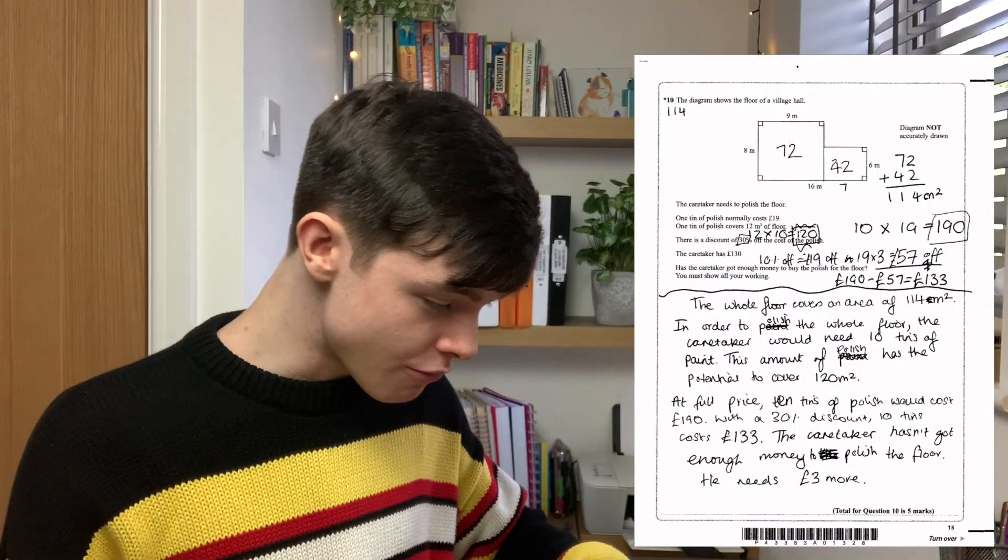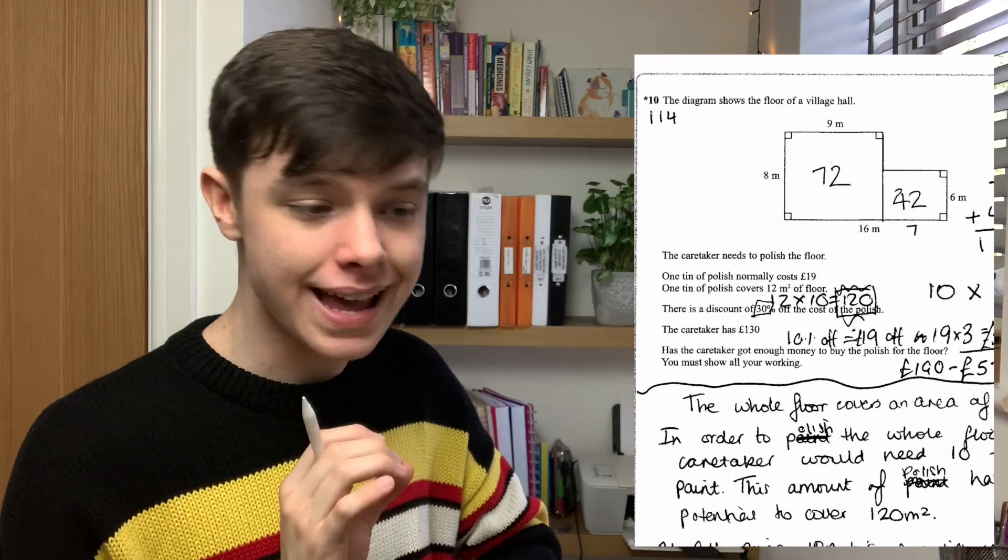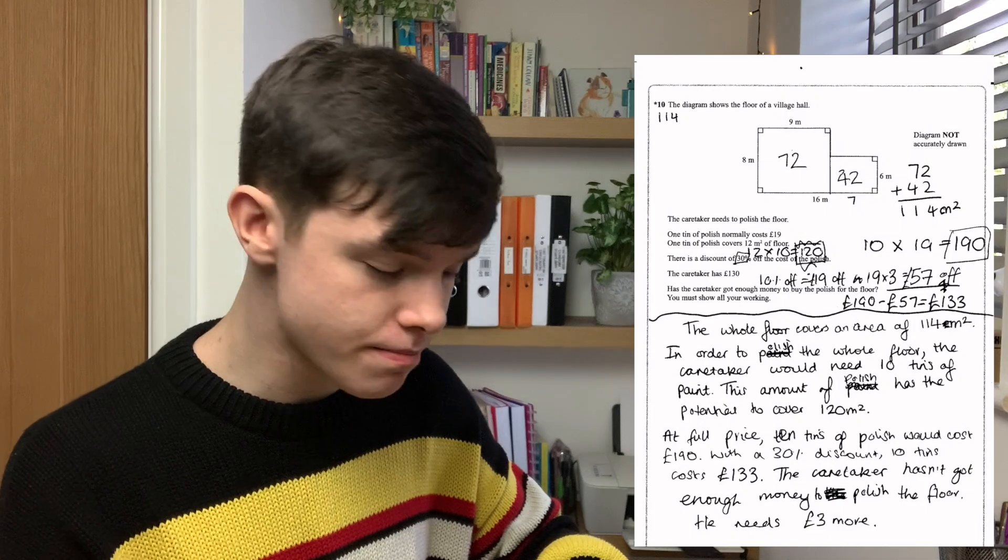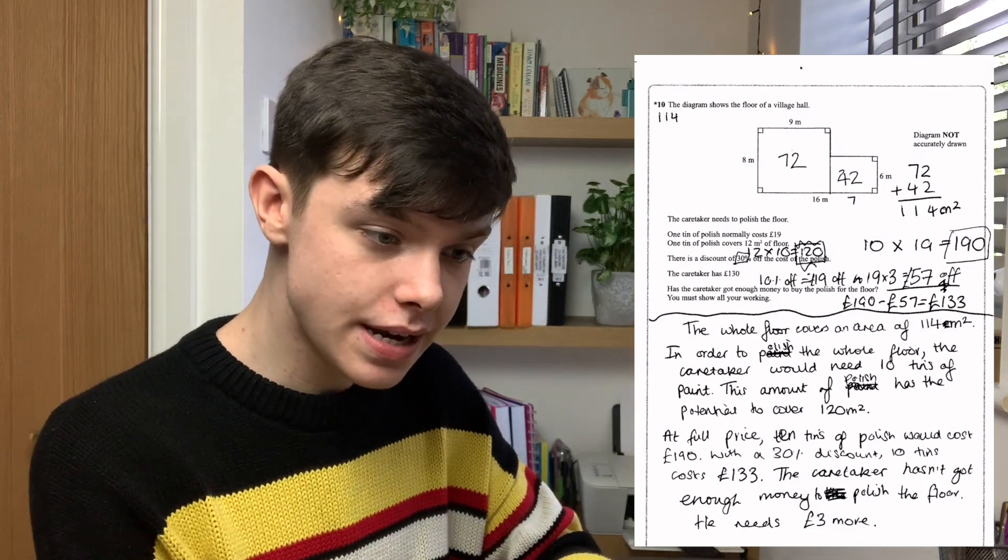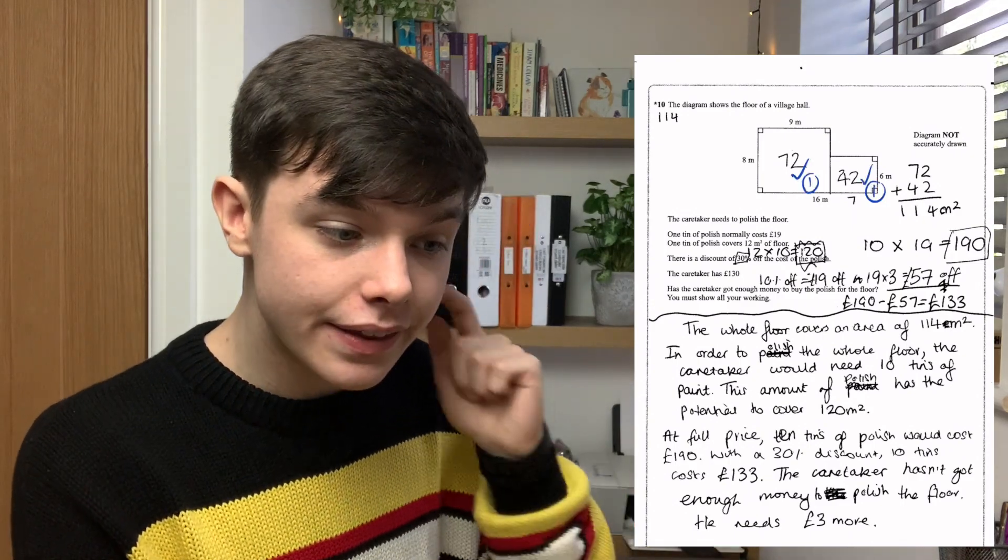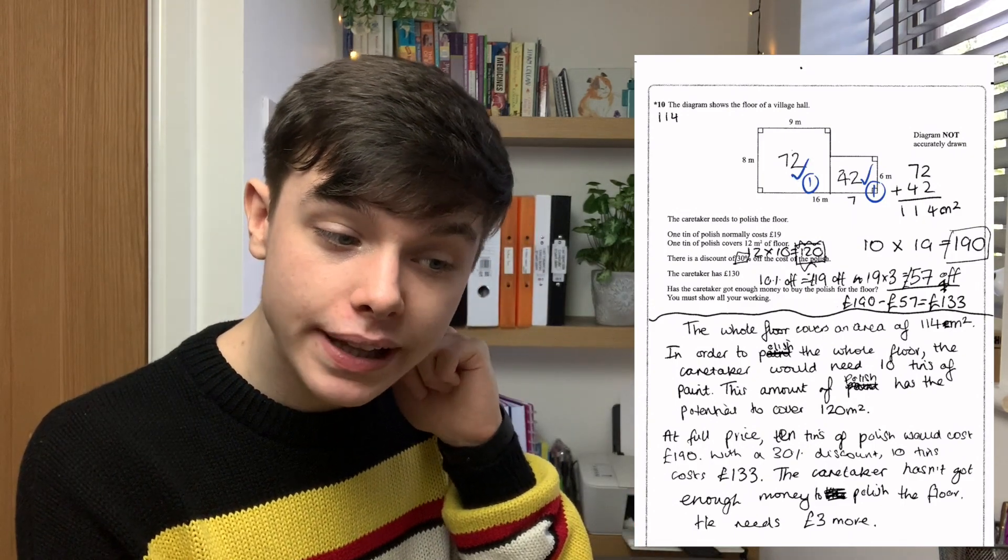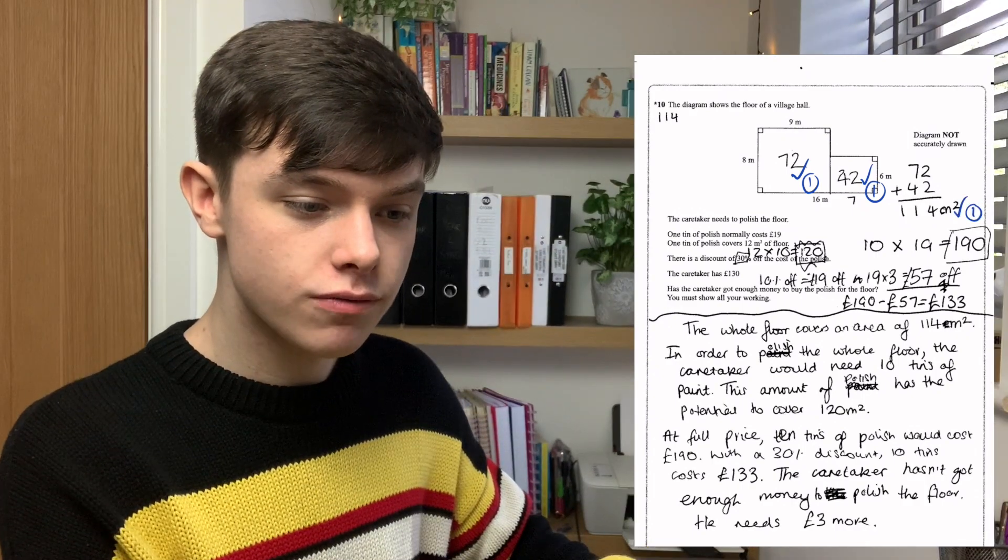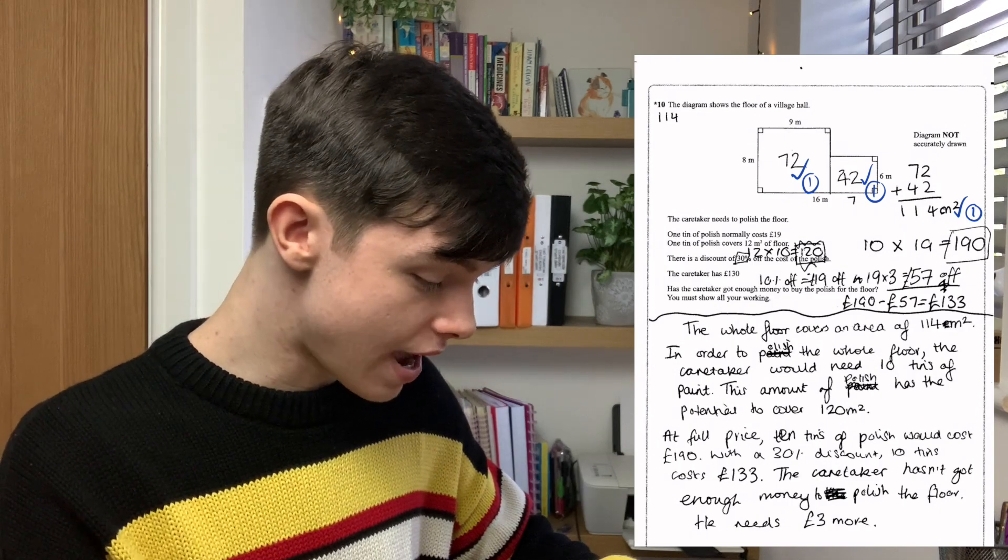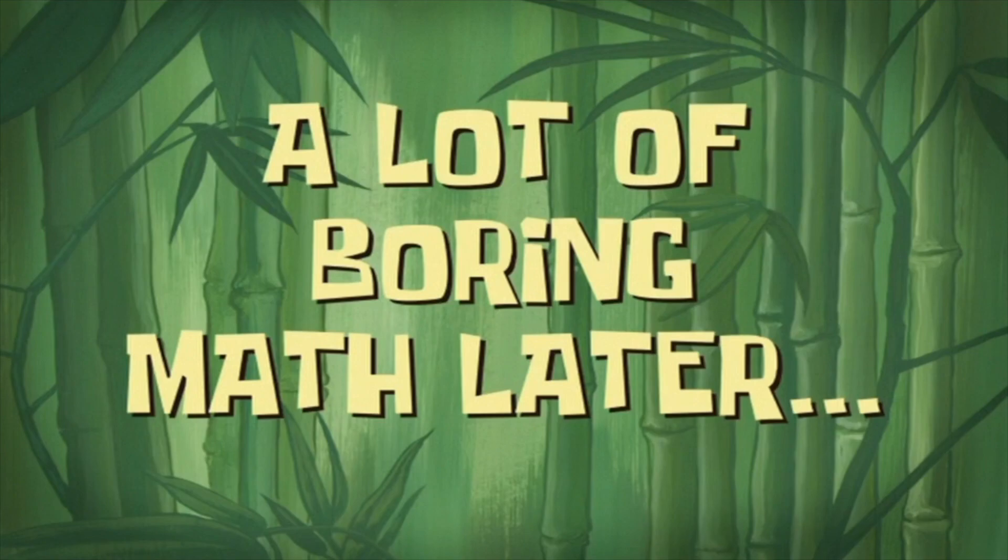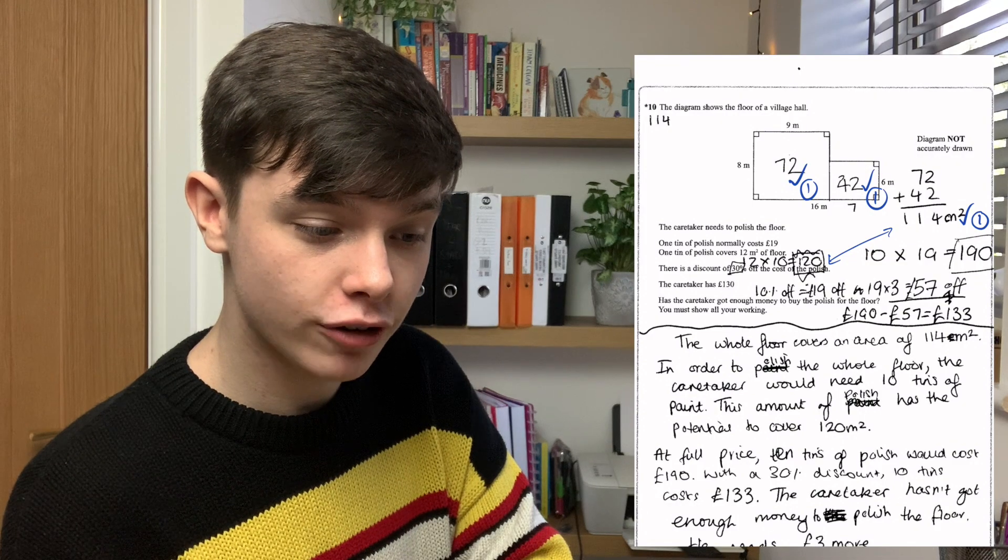Question ten. Whoa. So much writing. Let's see what the correct answer is. The correct answer is not enough. Needs 133 pounds. I can give you some marks for splitting the shape up and using the correct method to find the area of one shape. Then the next mark is a complete and correct method for finding the total area. Third mark comes from a method to find 70% of 19. I think you can get full marks.